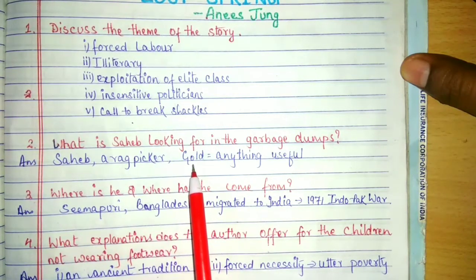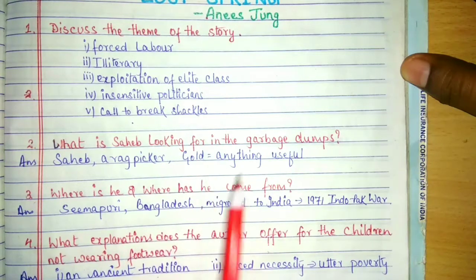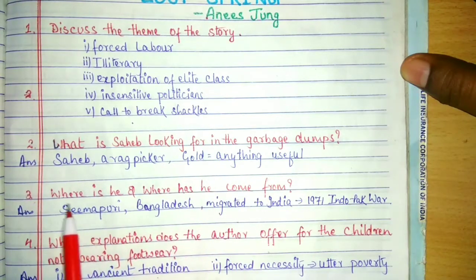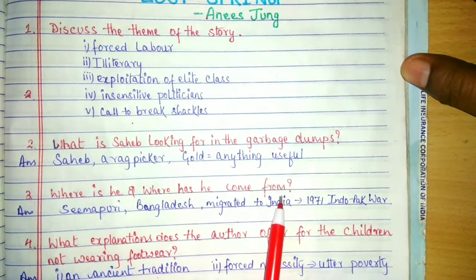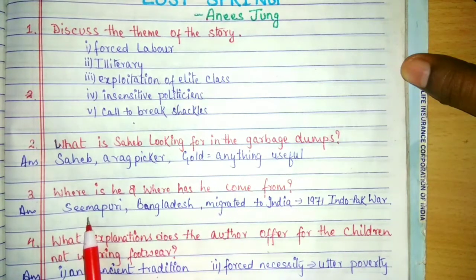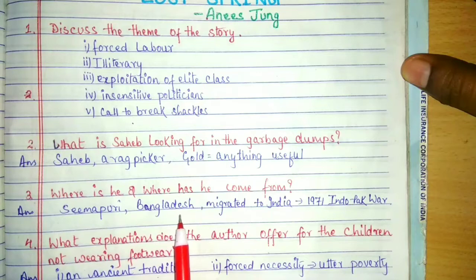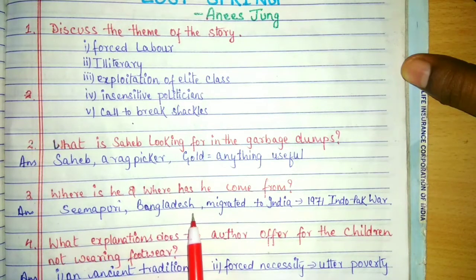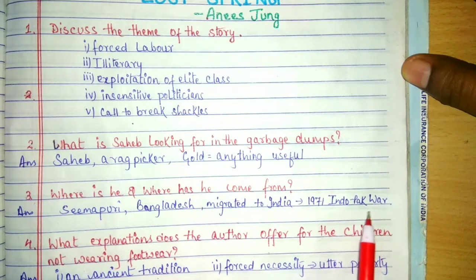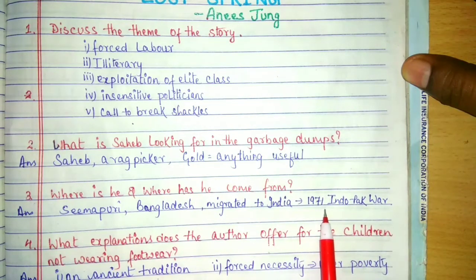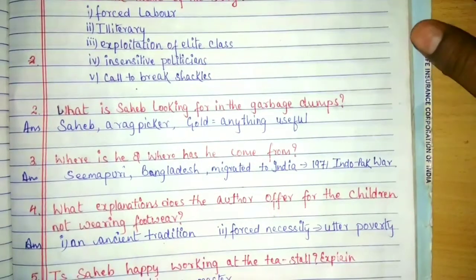That is why through hyperbole — through exaggeration — this is being highlighted. Next, where is he and where has he come from? Sahib Alam is in Seemapuri, and his original country is Bangladesh. From there he migrated to India during the war between India and Pakistan in the year 1971.